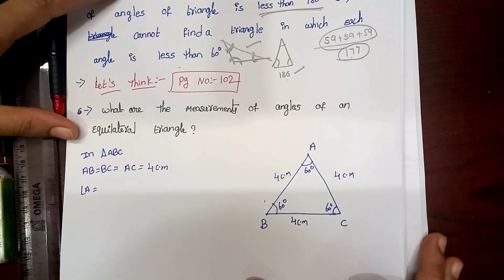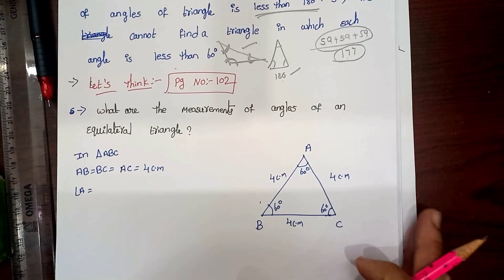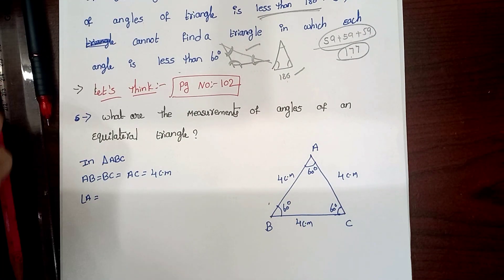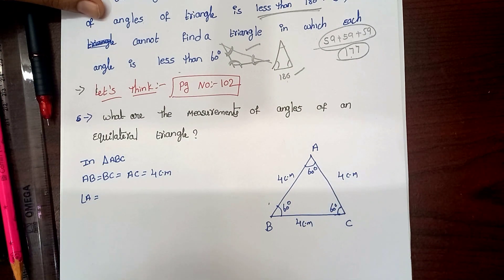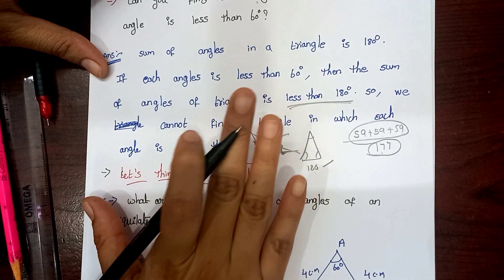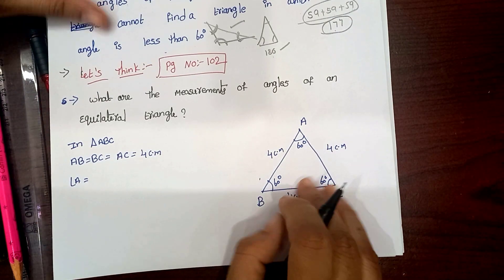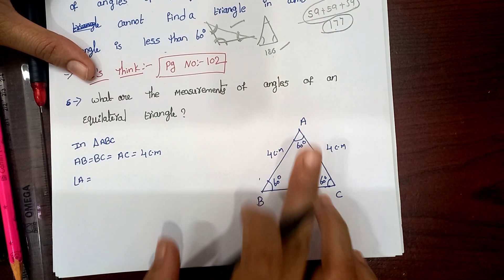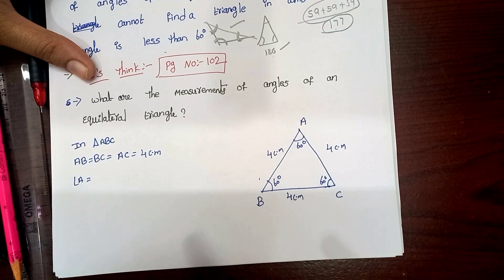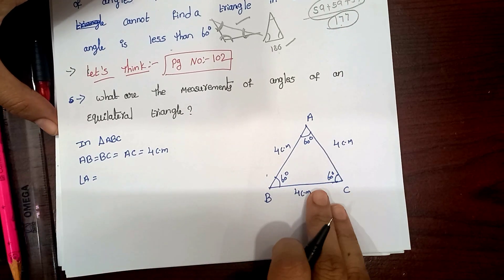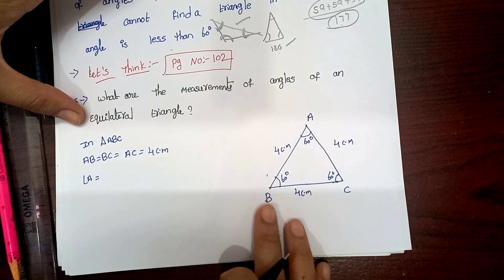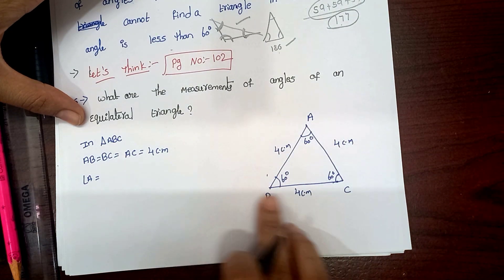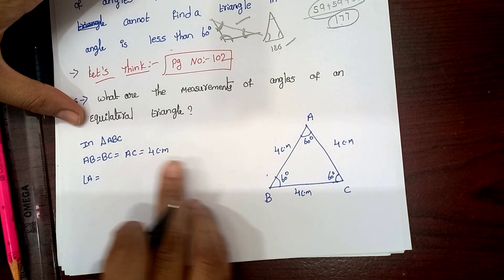I draw 4 cm, 4 cm, 4 cm — three sides are equal. In triangle ABC, the sides AB, BC, CA — these three sides are equal. Each side is equal.